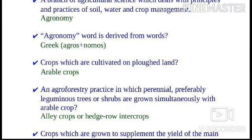The word 'agronomy' is derived from two Greek words — agros and nomos — which means management of land for crop production.